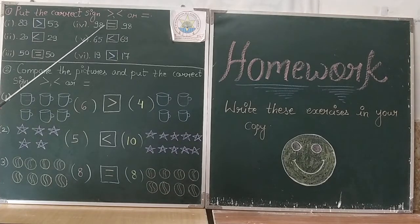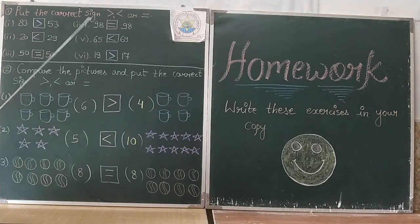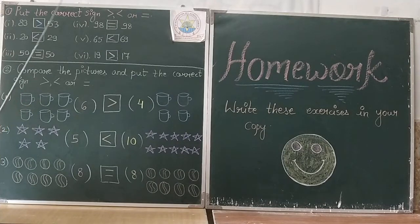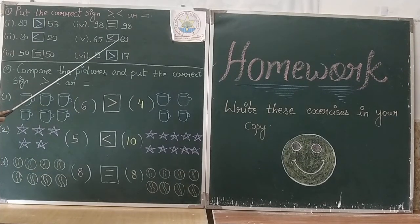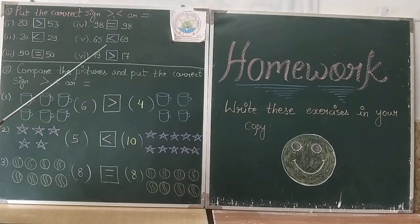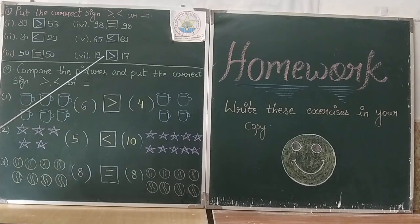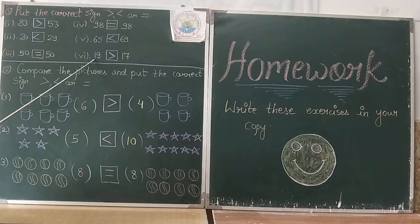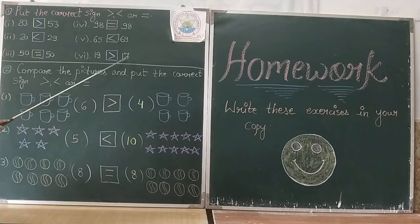Question number 4: 98 and 98 — both are equal, so we will put the equal to sign. Question number 5: 65 and 69 — 69 is greater than 65, so we will put the sign with open mouth 69 के सामने रहेगा और closed mouth 65 के तरफ। Question number 6: 19 and 17 — open mouth greater number 19 के तरफ रहेगा, and closed mouth smaller number 17 की तरफ रहेगा।